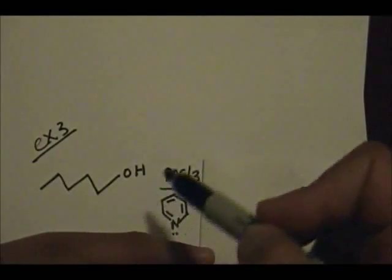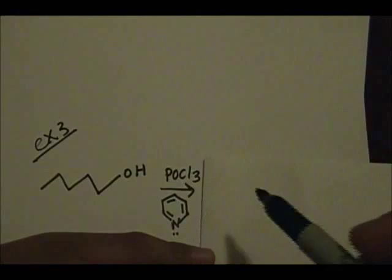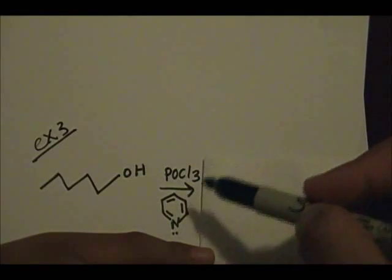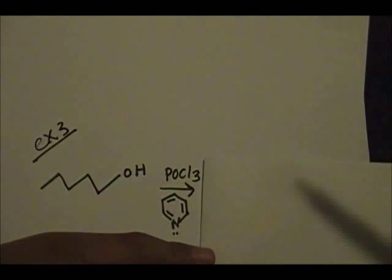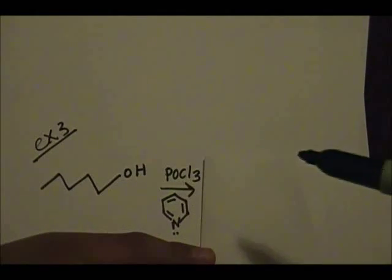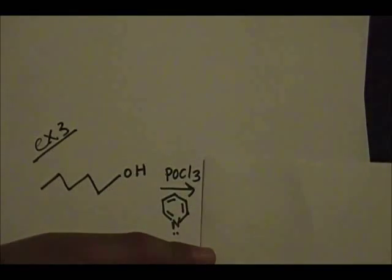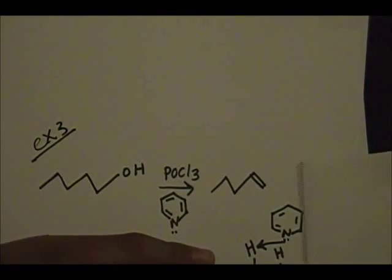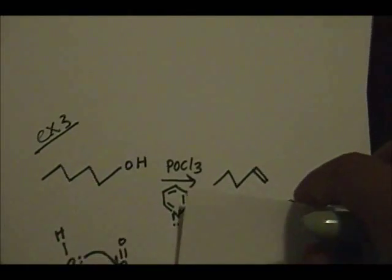If you have this primary alcohol reacting with POCl₃ and pyridine, the product of this reaction is this alkene. Let's go over the reaction mechanism.